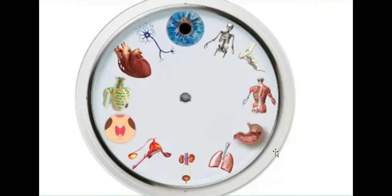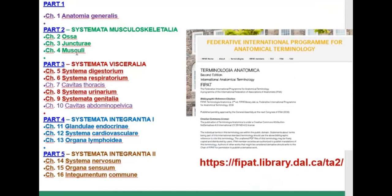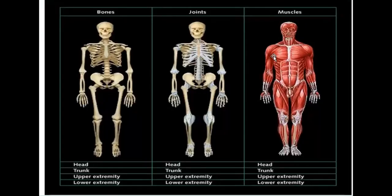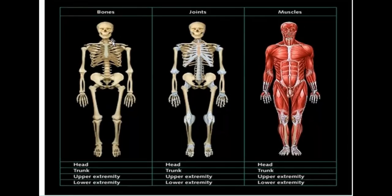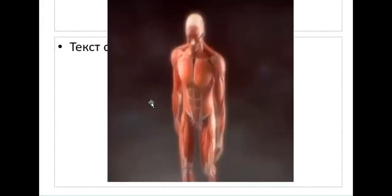Muscles in the locomotor or musculoskeletal system include bones, joints, and muscles totally. Classification covers muscles in the head, trunk, upper limb, and lower limb. The main function of muscles is locomotion — that is, moving in space.